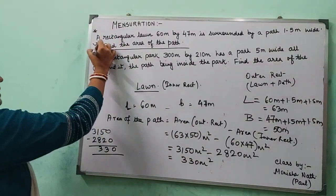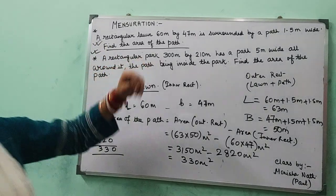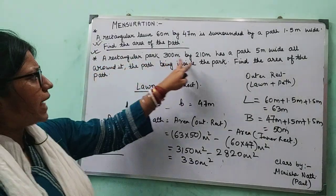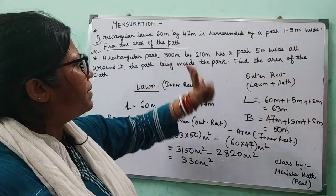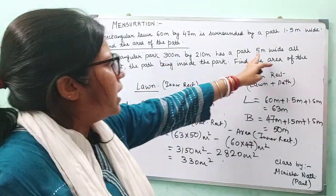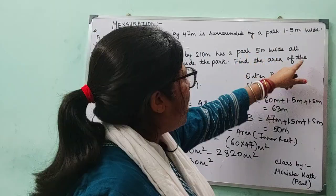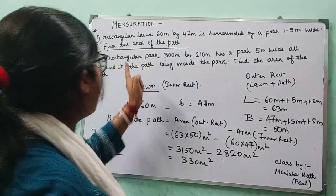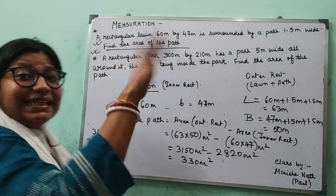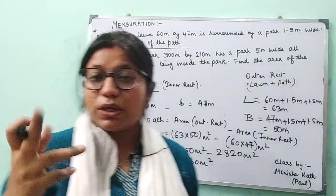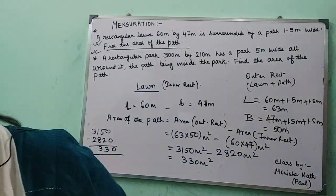Now, the second sum: a rectangular park with given dimensions — length and breadth — has a path 5 meters wide all around it, the path being inside. So the path is inside the park. What are we going to do?